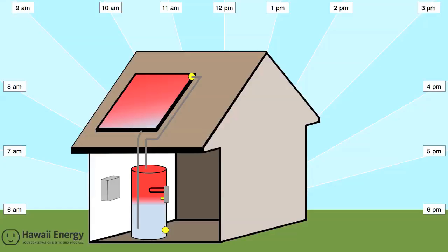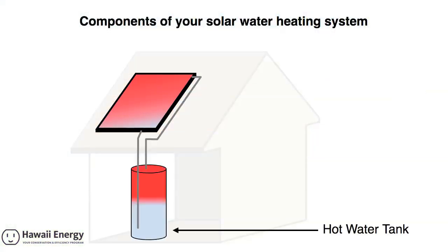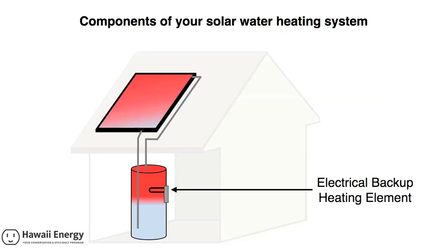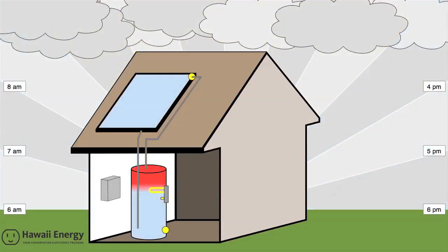In the prior video, three of the four major components of your solar water heating system were introduced. They were the solar collector panels on your roof, the hot water tank, and the electric backup heating element located inside the hot water tank. The video presented how the system heats your water with the sun's energy. It also illustrated how your system's electric backup heats your water during a spell of cloudy weather.